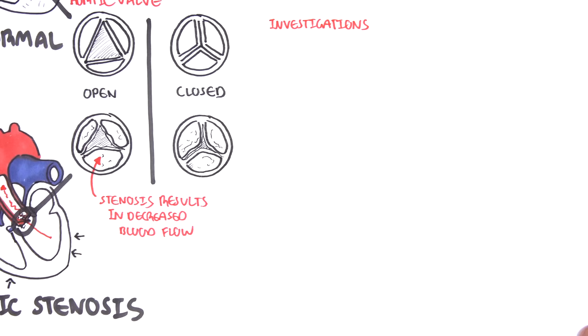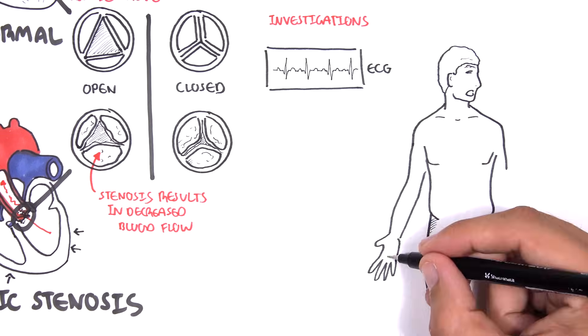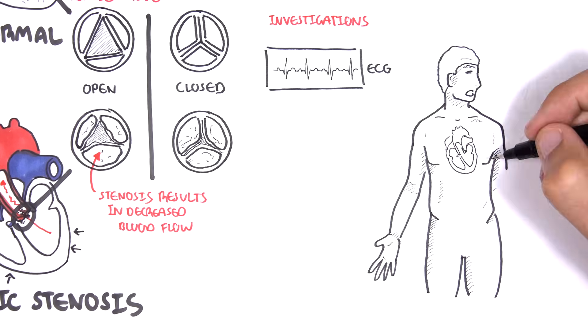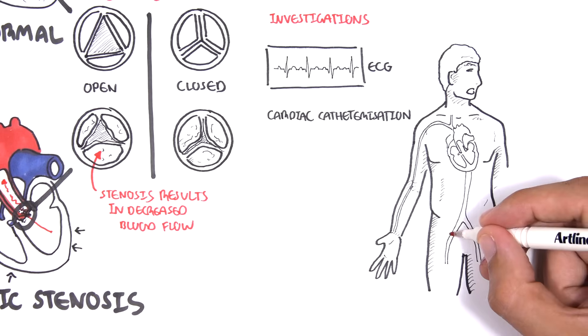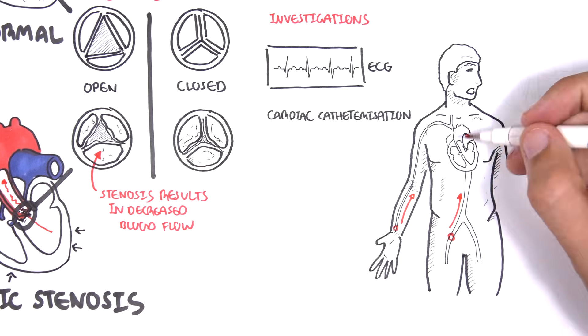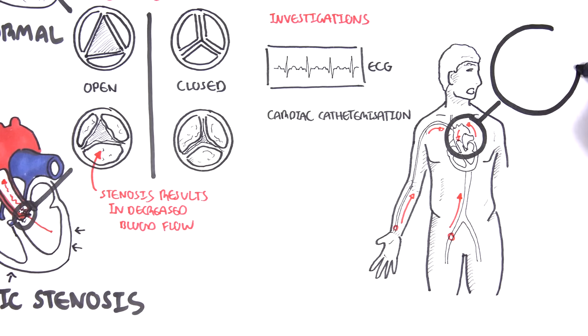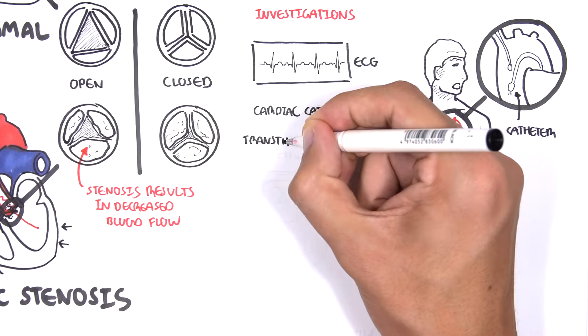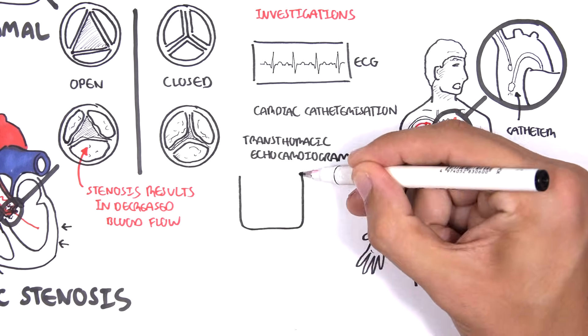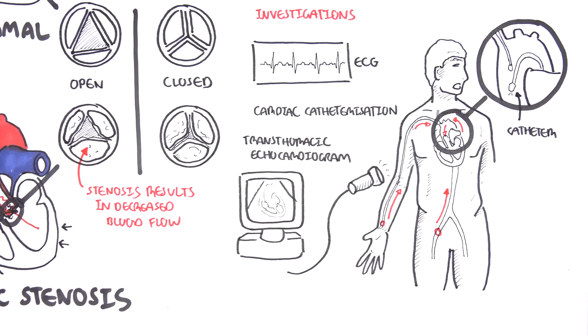Investigations include an ECG which may show left ventricular hypertrophy. Cardiac catheterization can be performed through the femoral artery or radial artery where the catheter is fed through till it reaches the aortic valve. Here is a catheter approaching the aortic valve. The catheter allows visualization of the aortic valve. Transthoracic echocardiogram can also be performed and is gold standard for looking at valvular heart diseases.